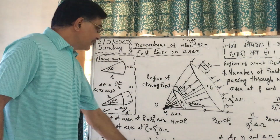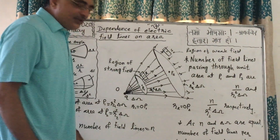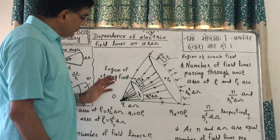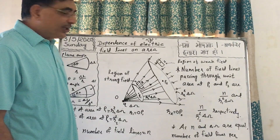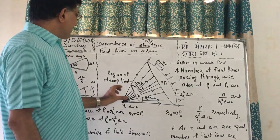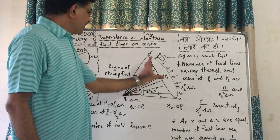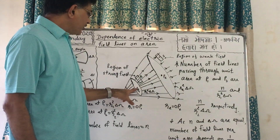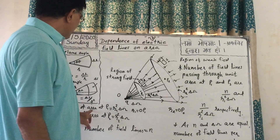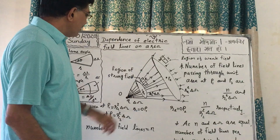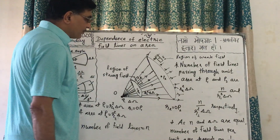Now this is the figure. This is a point-like positive charge, so field lines are going outward radially. I have considered two areas: one element of area at point P1 and one element of area at point P2.